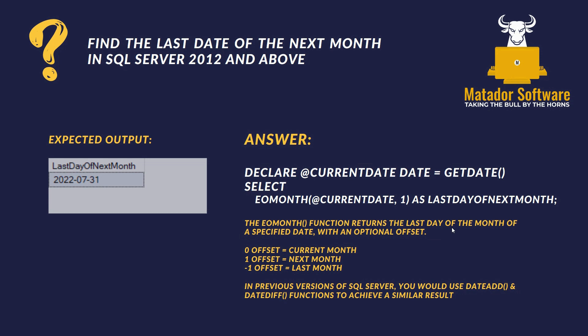Here's the answer. We need to declare a variable — we can declare the current date with the date data type using GETDATE(), that function which returns today's date. Then we run our SELECT query using the EOMONTH function, the End of Month function, referencing that current date variable.